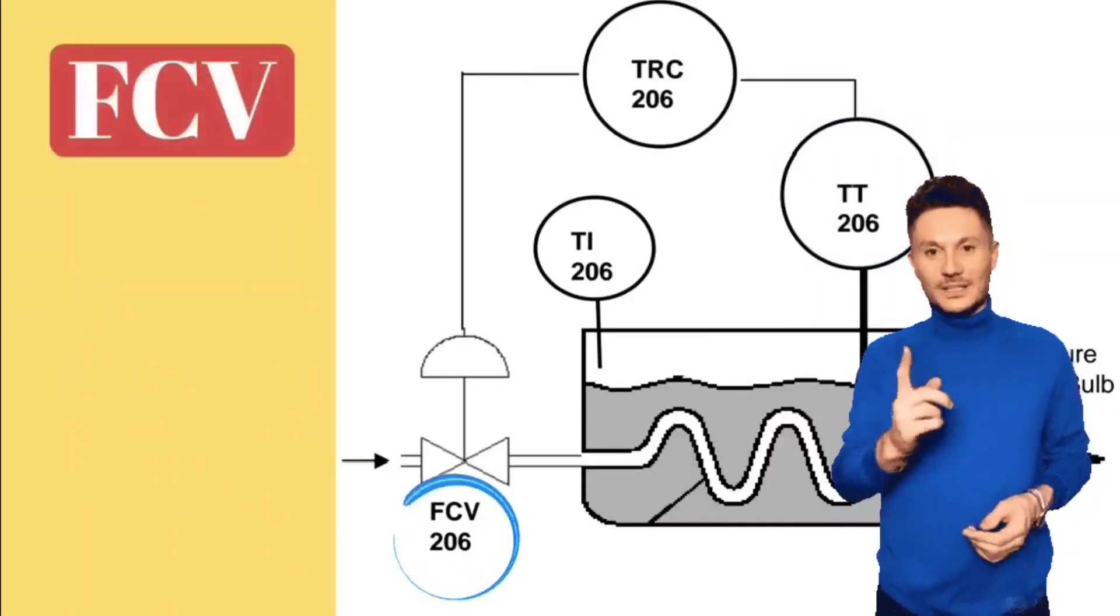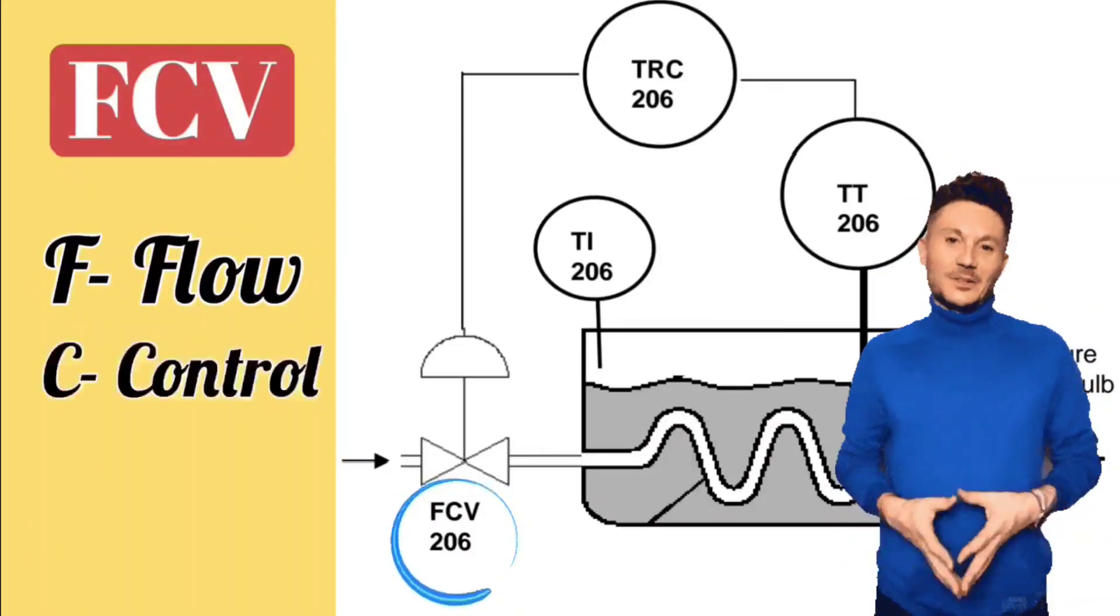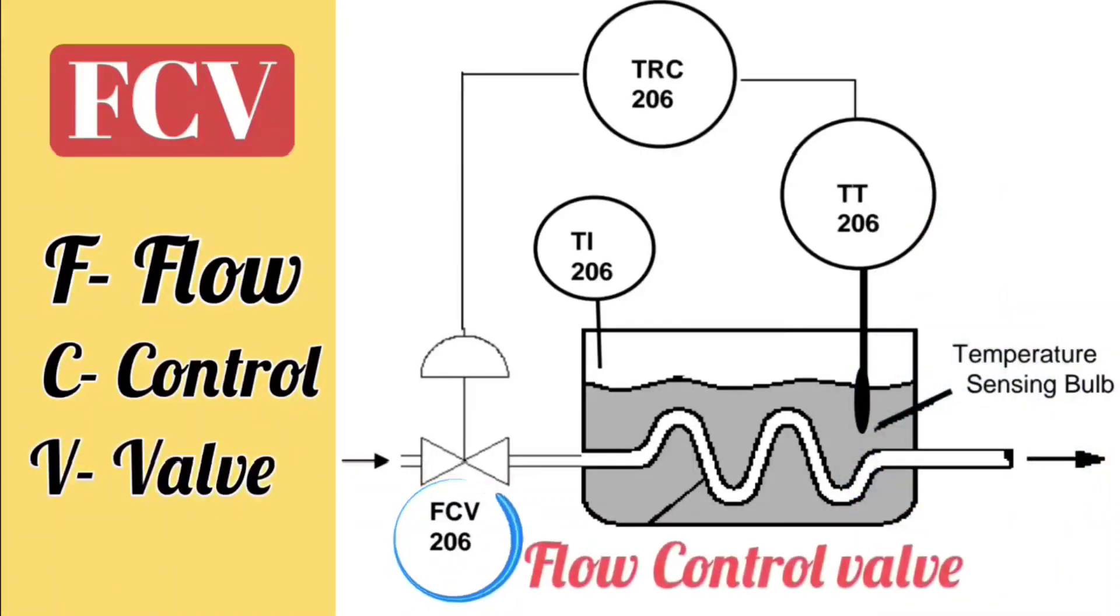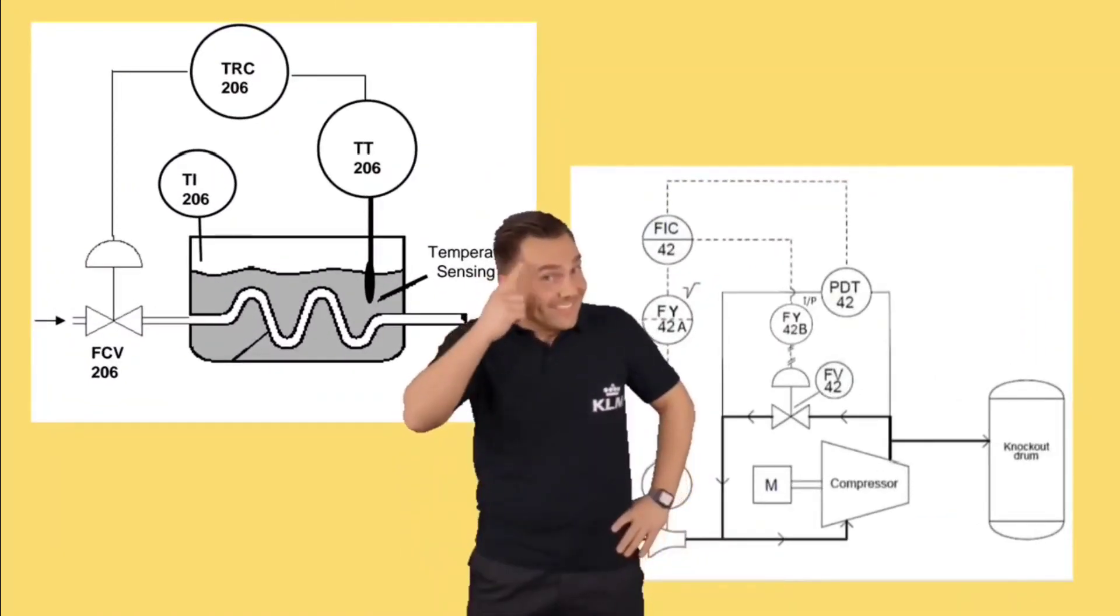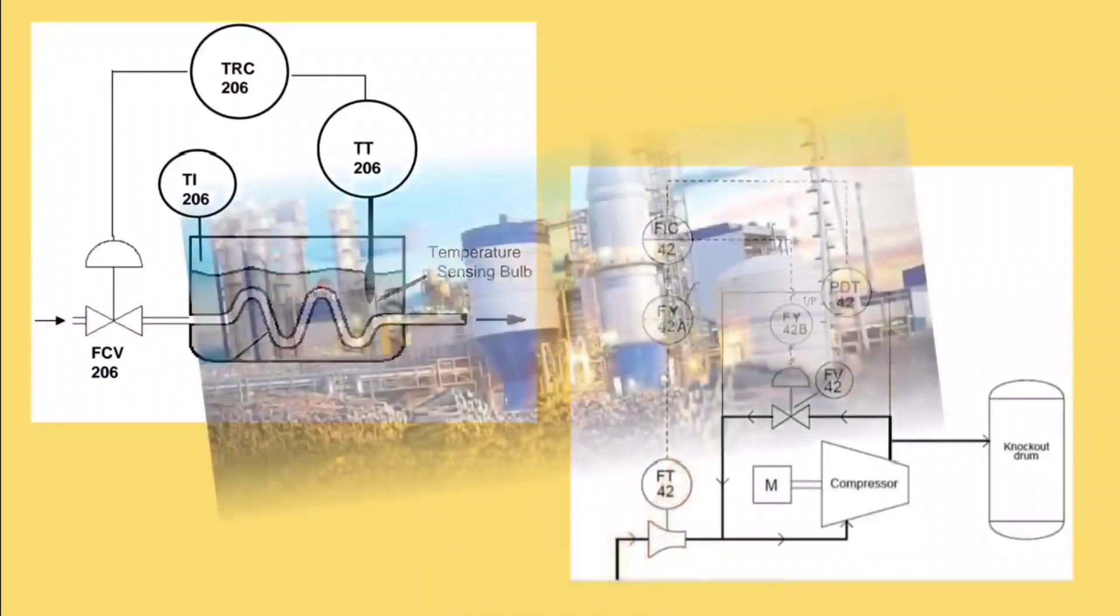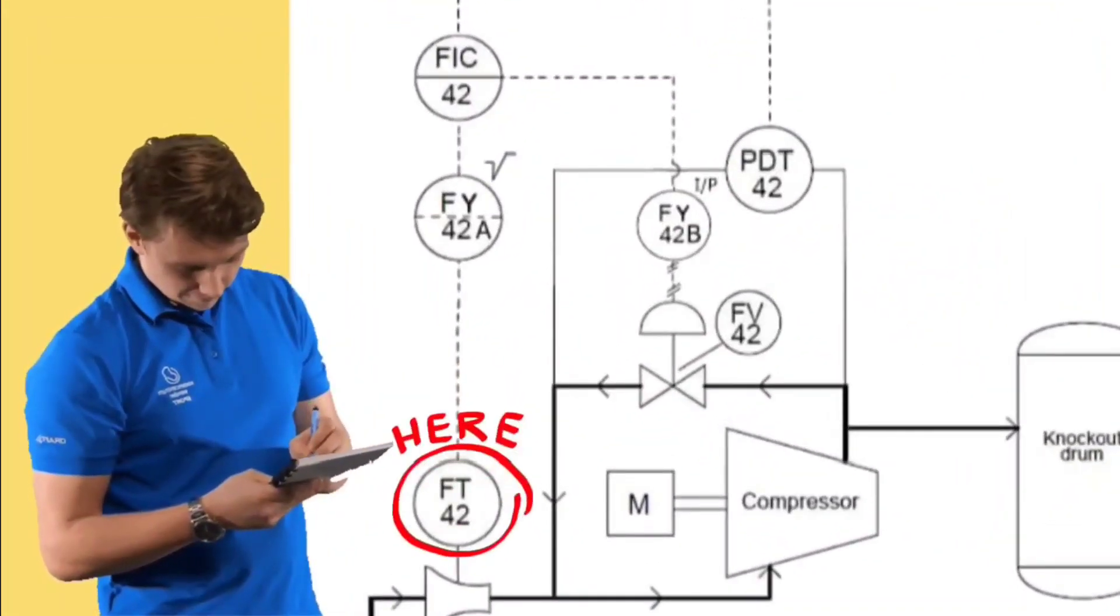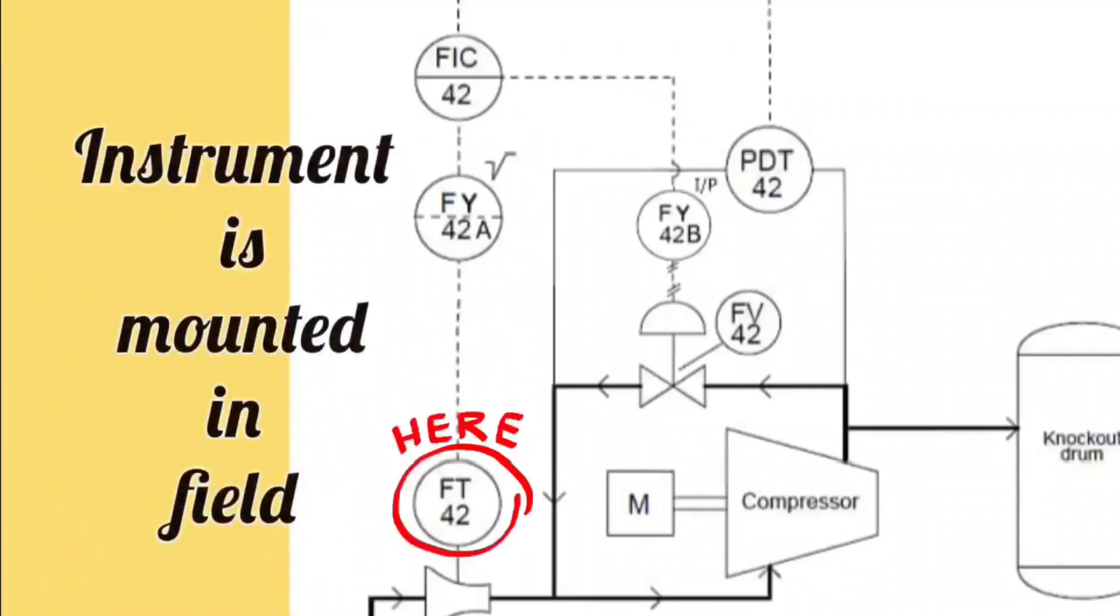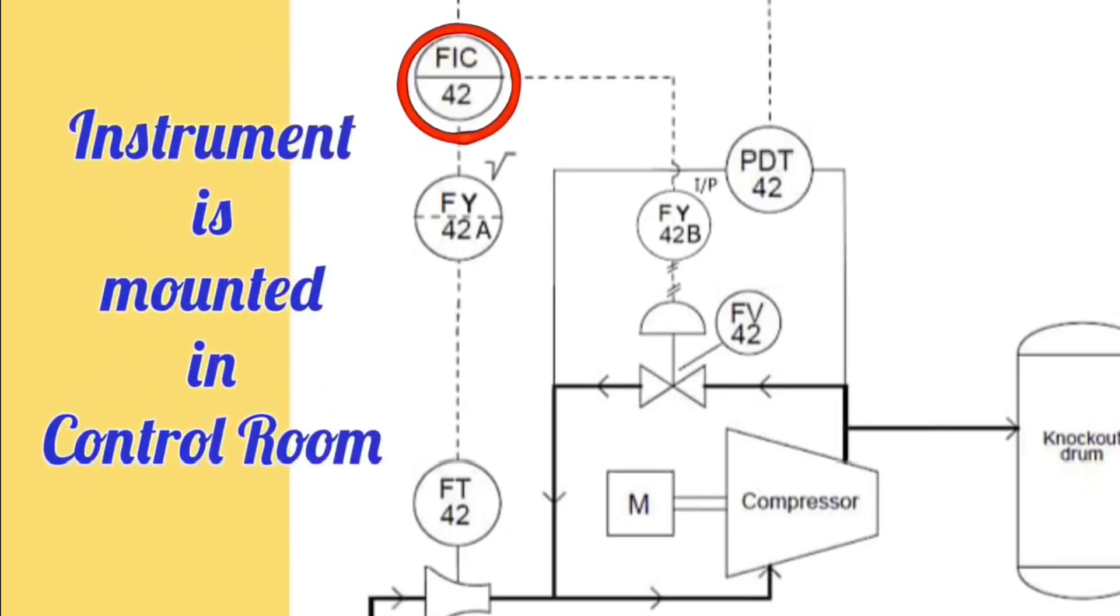Similarly, FCV is written: first letter F means flow, second letter C means control, and third letter V means valve. Means, flow control valve. By looking at P and ID, you will also come to know instruments are connected at which location. Like, if there is no line in between the circle, it means instrument is mounted in the field. If there is solid line in between the circle, it means the instrument is mounted in the control room.